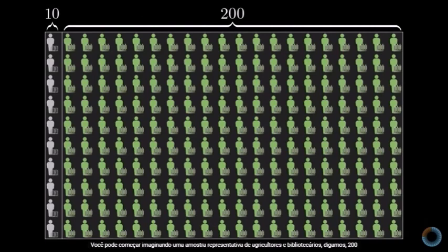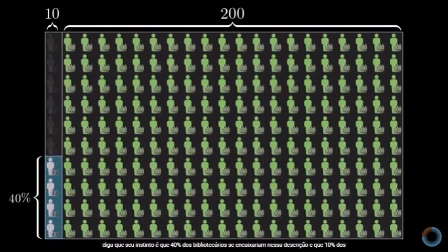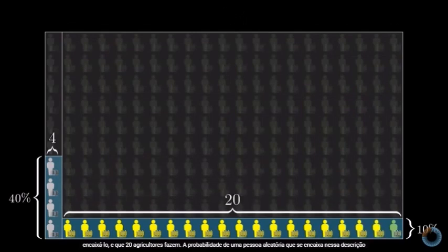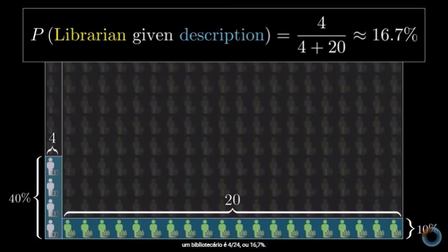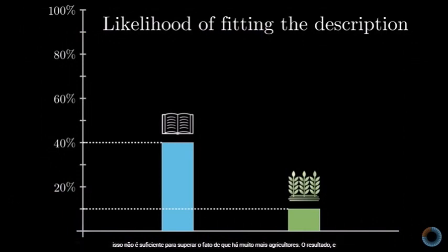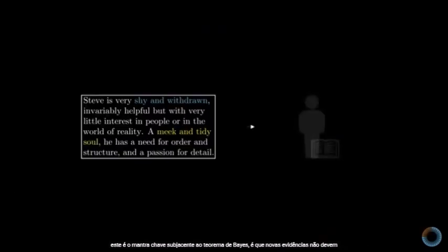You might start by picturing a representative sample of farmers and librarians — say 200 farmers and 10 librarians. When you hear this meek and tidy soul description, let's say your gut instinct is that 40% of librarians would fit that description, and that 10% of farmers would. From your sample, you would expect about 4 librarians to fit the description and about 20 farmers. So the probability that a random person among those who fit this description is a librarian is 4 out of 24, or 16.7%. New evidence does not completely determine your beliefs in a vacuum — it should update prior beliefs.